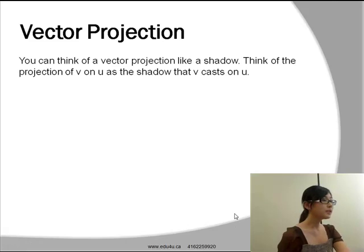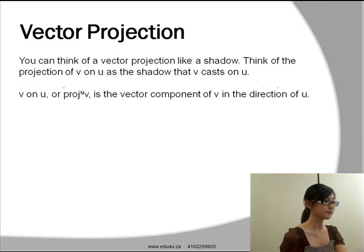Now let's take a look at vector projection. You can think of a vector projection like a shadow. Think of the projection of v onto u as the shadow that v casts on u.